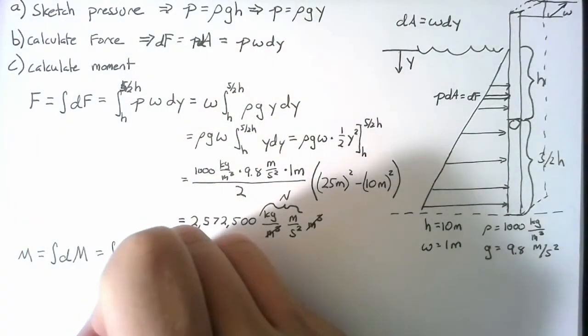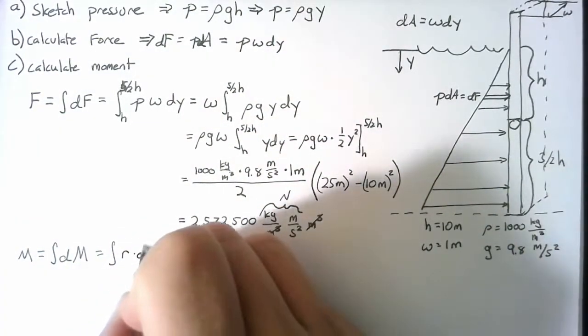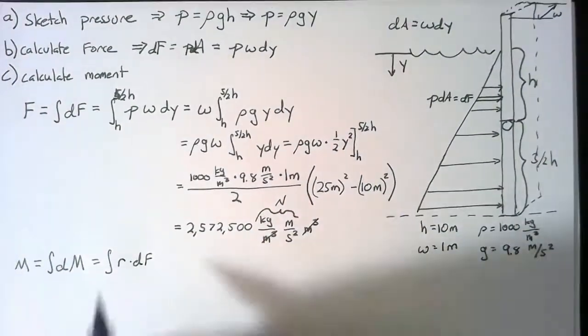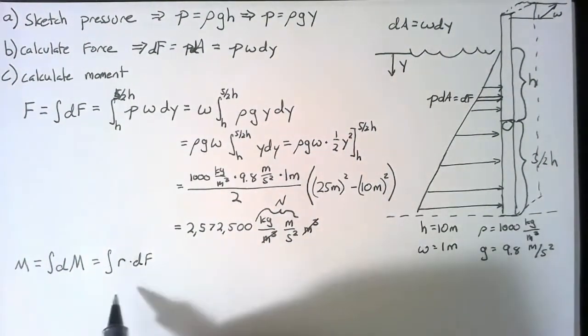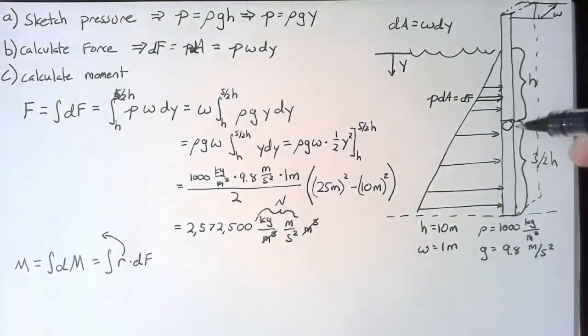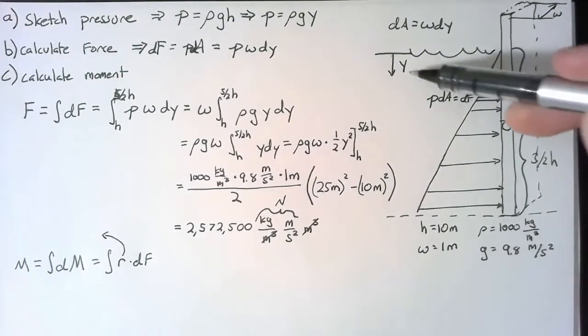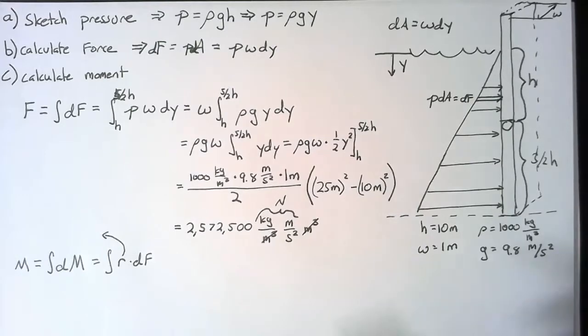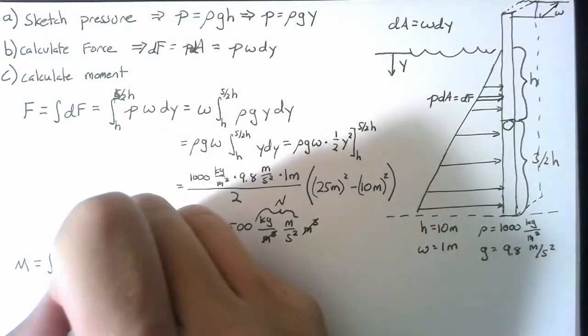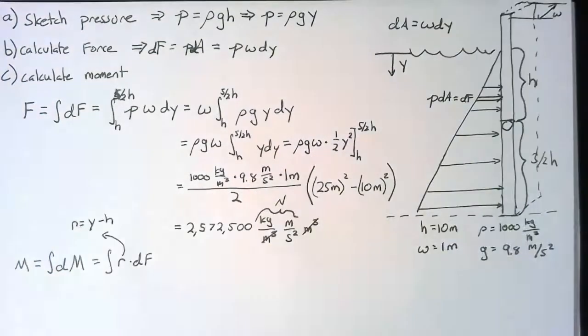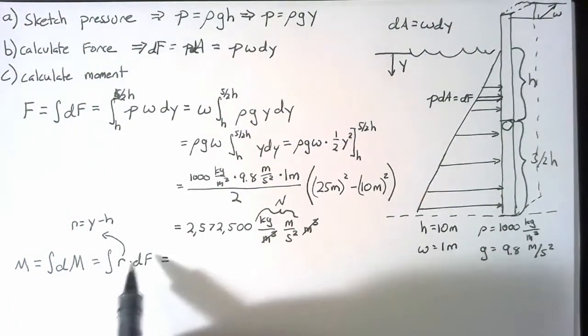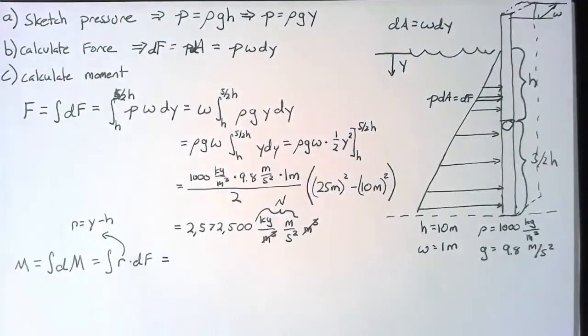Well, we need some moment arm multiplied by some differential force. Our moment arm here, we need to write in terms of y. Our moment arm is around this point right here. So we can say that this is y minus h. So r is equal to y minus h. Okay, so we write the rest of this out using the df that we have above.